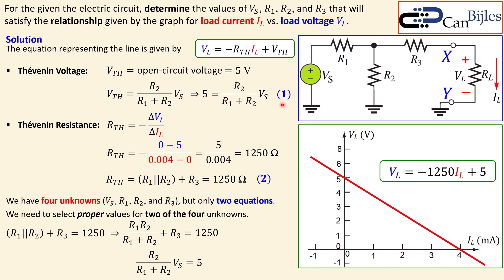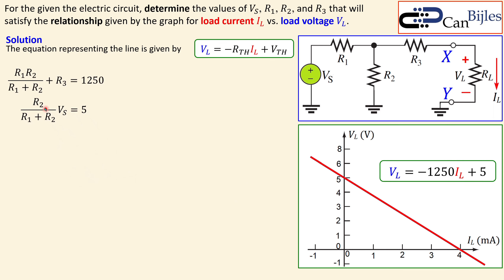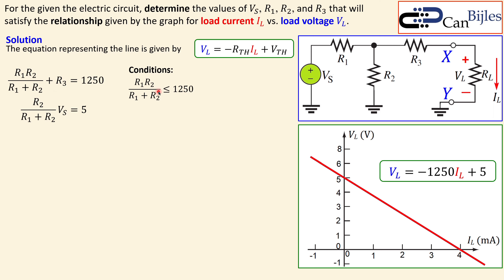Now there are some conditions. The parallel combination of R1 and R2 in series with R3 must add up to 1250. If I make the parallel combination larger than 1250, then R3 would have to be negative, which is not practical. For example, if the parallel combination is 1400 ohms, R3 would be minus 150 ohms — not possible. So the parallel combination of R1 and R2 must be less than 1250.